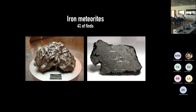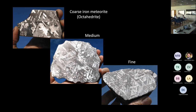Another type are iron meteorites — very famous — which come from the core of differentiated objects. Next time you hold one, you're basically holding a planetary core, which is pretty cool. They represent about 4% of finds. Very interesting are the diagonal mineralogical structures called Widmanstätten patterns. Their thickness varies from meteorite to meteorite and is related to the cooling rate of the parent body. By studying these patterns, we can infer the cooling rates and determine that these parent bodies must have been quite small — a few hundred kilometers in size — giving us a first constraint on the initial size of planetesimals in our solar system.